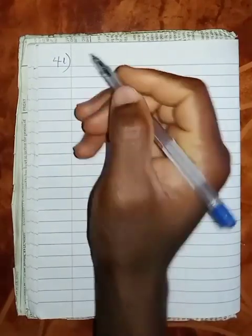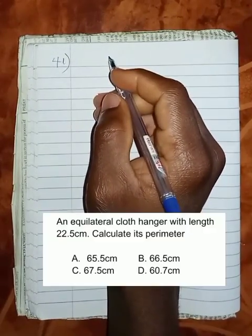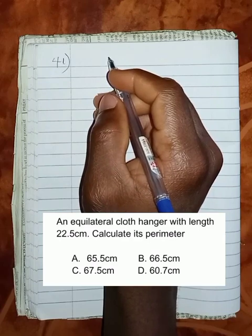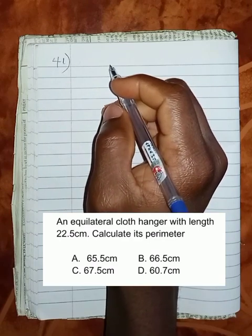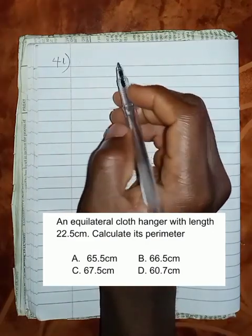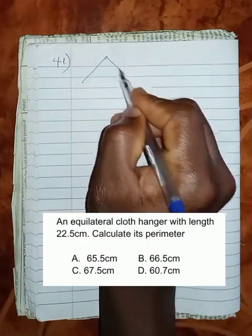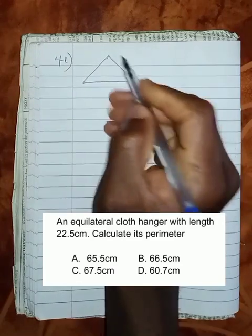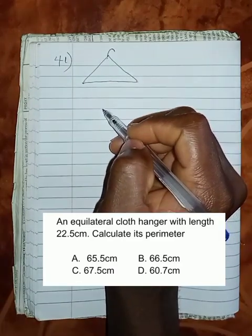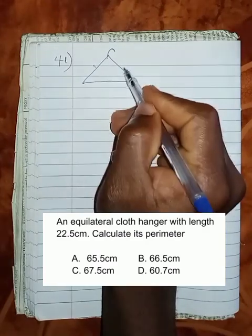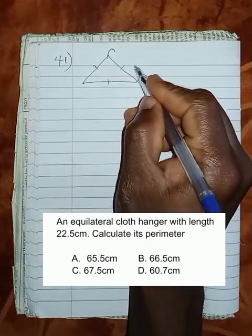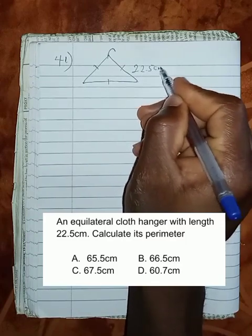Question 41 says, an equilateral cloth hanger with length 22.5 cm. Calculate its perimeter. The hanger must have the shape of a triangle. If it is an equilateral, it means that all sides here must be equal in the hanger. So we're told that one side is 22.5 cm.